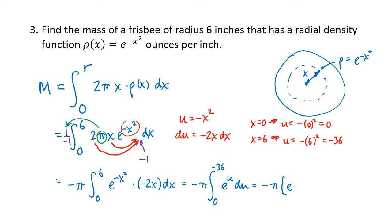Now, we've got an antiderivative that's pretty easy. Antiderivative of e to the u is just e to the u. We're going to plug in negative 36, plug in 0, and subtract in that order. So we have minus pi times e to the minus 36 minus 1. If I distribute that negative, that's just going to give me pi times 1 minus e to the minus 36. And that's our mass. Again, given in ounces per inch, so if we need the units here, that would be ounces.